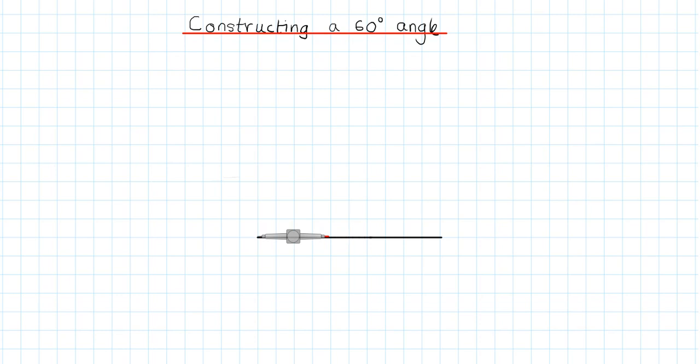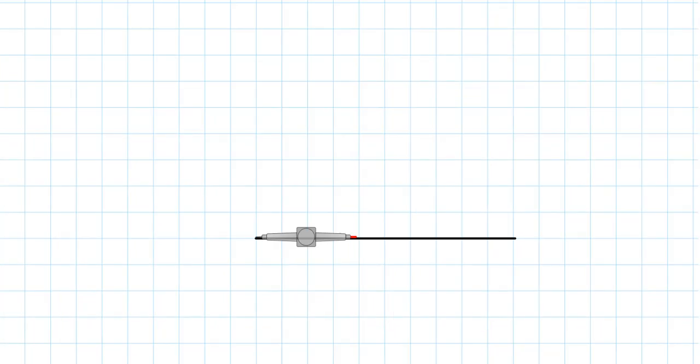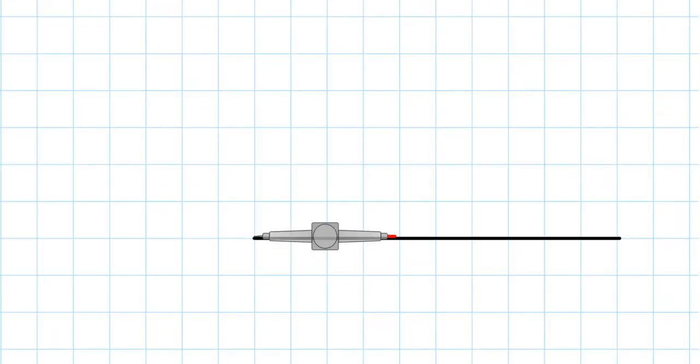What I'm going to do is I am going to place the metal tip. Let me see if I can zoom in here. So the metal tip of the compass needs to go onto one end of the line.